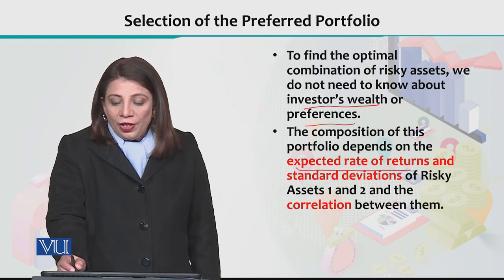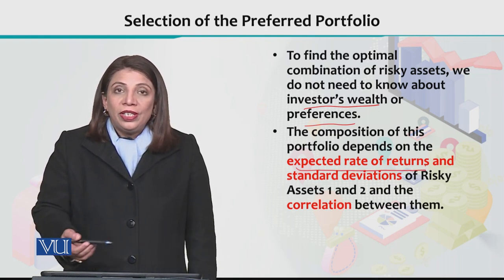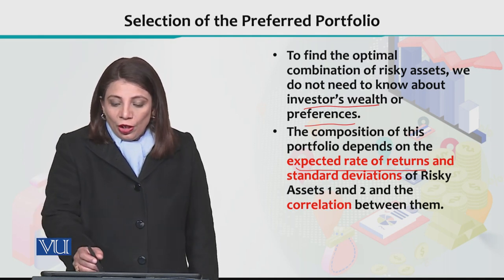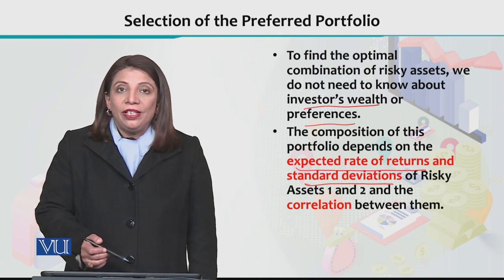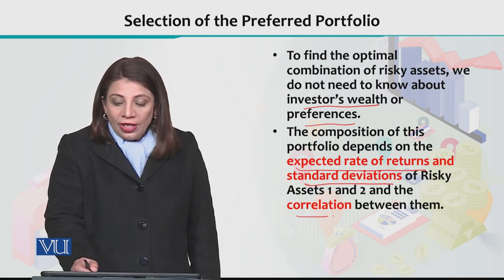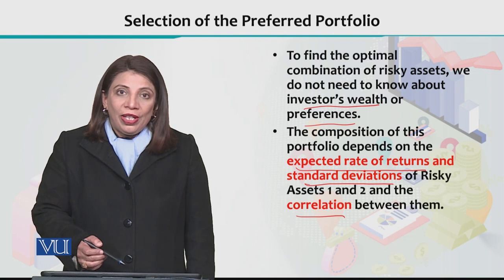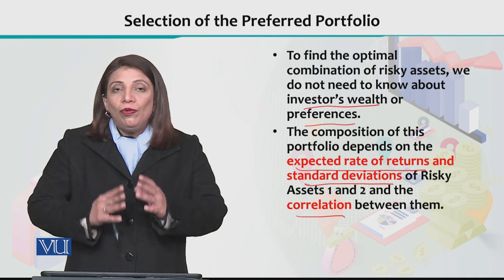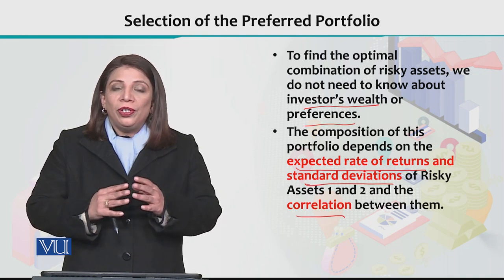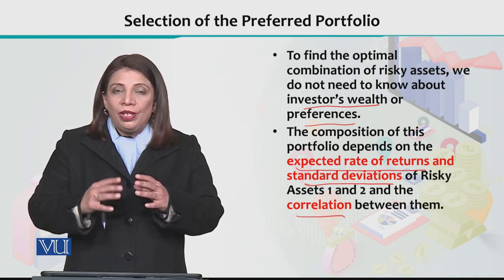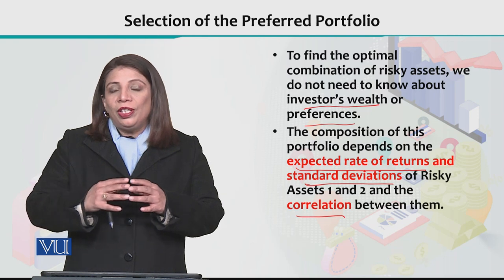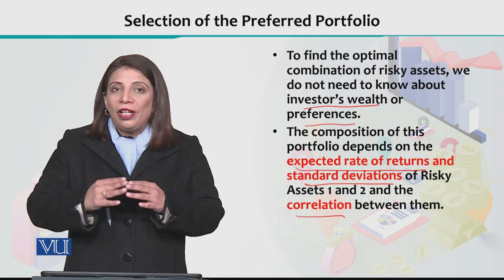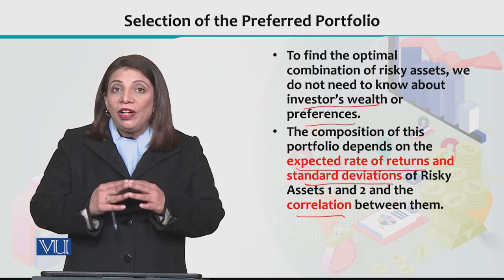The three factors are: first, the expected rate of returns from the risky assets and the risk-free asset; second, the standard deviations; and third, the correlation between them — that is, to what extent they co-vary, whether they move together in the same direction or in opposite directions, and what is the strength of association.